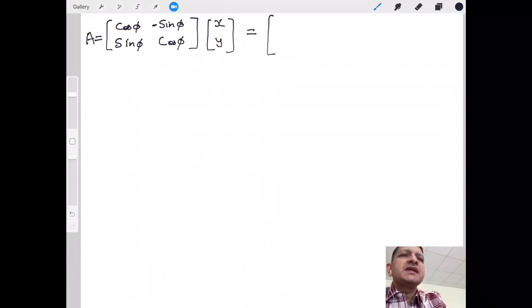This matrix is called a rotation matrix because it's going to rotate. As I multiply, I am going to get x cos φ minus y sin φ.